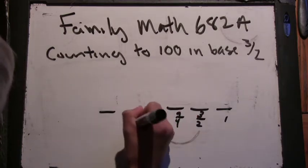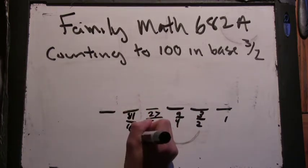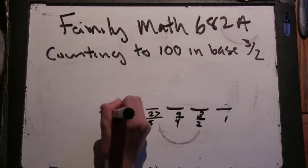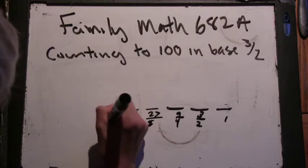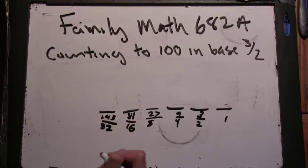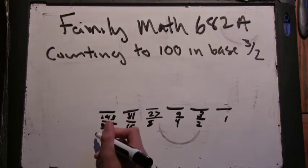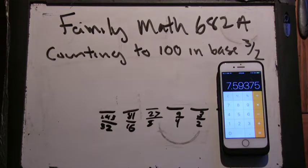243 over 32. There, I did it on my calculator. Save you a little bit of time. It's about 7.59.